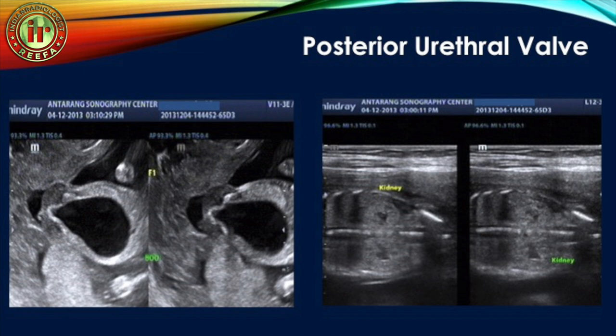In cloacal dysgenesis or persistent cloaca, the distended bladder has a normal or thick wall, and we can see hydrocorpus posterior to the bladder. Due to compression of the bladder outlet by the hydrocorpus, the bladder and ureters are dilated with hydronephrosis. Amniotic fluid may be normal or reduced depending on the degree of obstruction.